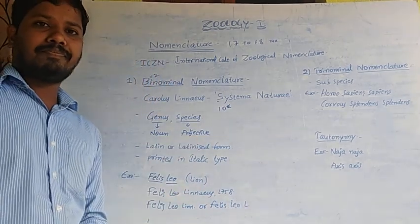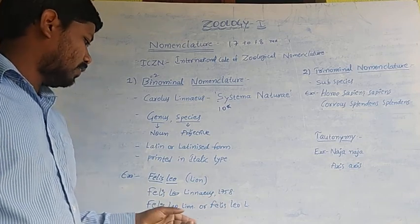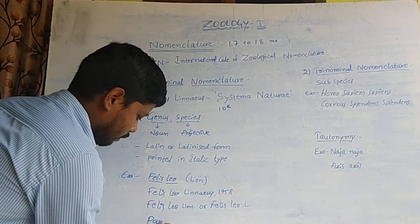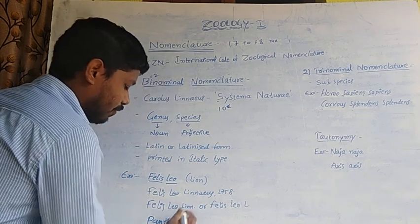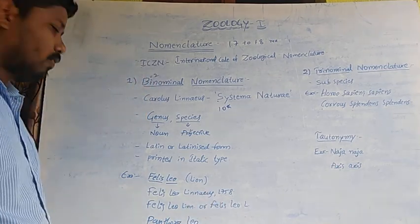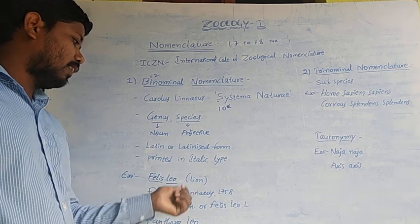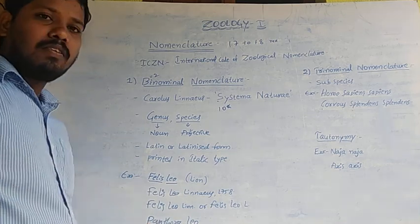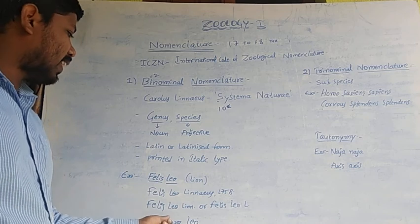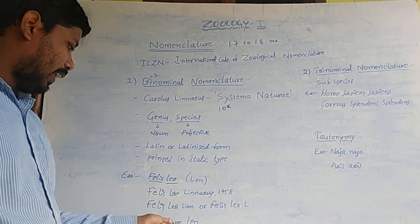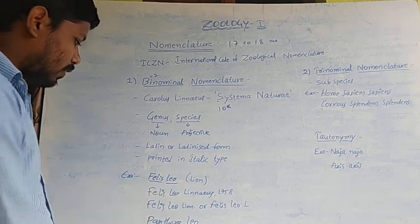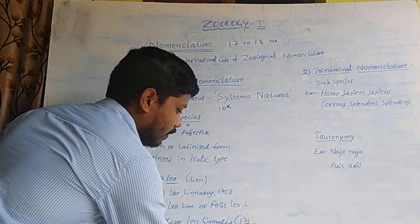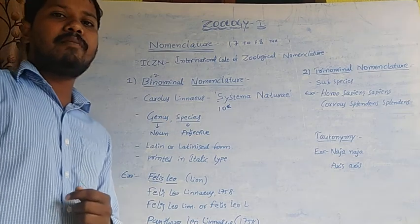After some time, the lion was shifted to the genus Panthera, so the scientific name of lion became Panthera leo. Since it was still described by Linnaeus but separated from the genus Felis, we write the discoverer's name in brackets in the scientific name to indicate this reclassification. This is the binomial nomenclature method.